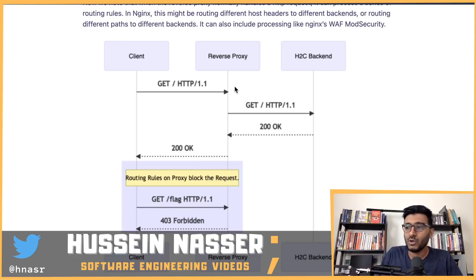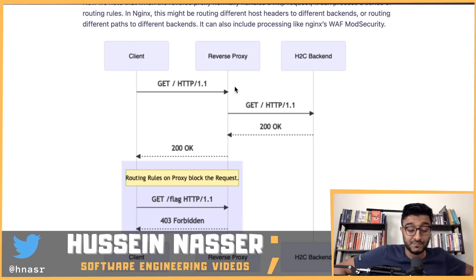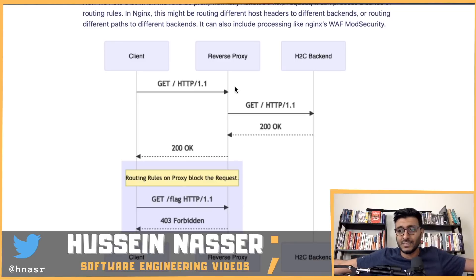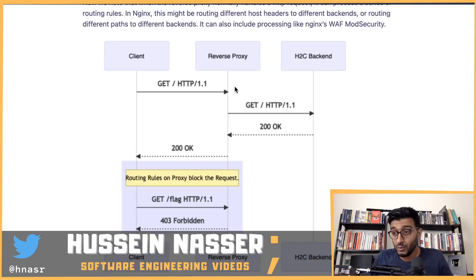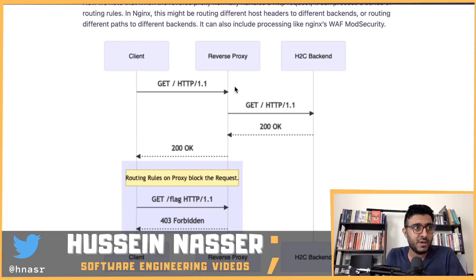Those middleboxes started blocking HTTP/2 traffic, saying 'what the heck is this, it's not HTTP,' so browsers gave up and decided to secure HTTP/2 by default, which was great. But there's still this lingering thing called HTTP/2 over cleartext that we still support - for reasons I don't know. Please tell me if you have a use case, because we shouldn't be supporting it. And because it's there, we have to support all the baggage that comes with it, like the upgrade mechanism.